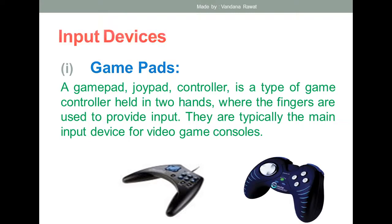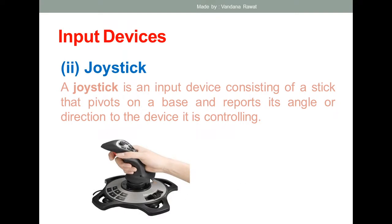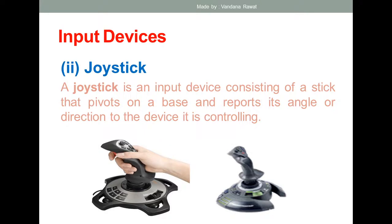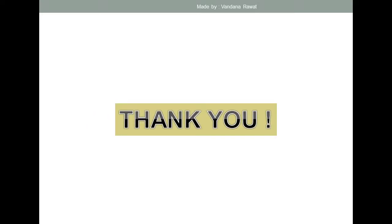The joystick is another input device used in game controllers. It has one stick that pivots on a base and reports its angle or direction to the device it is controlling. I hope it is clear why all these devices are classified as input devices and how we give input using them. Thank you everyone.